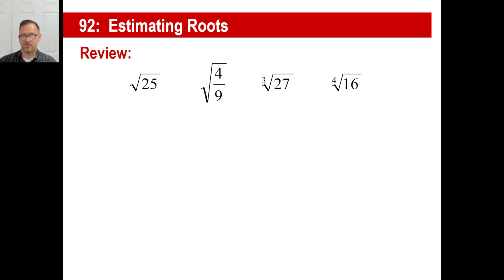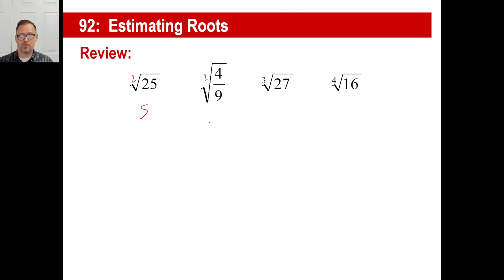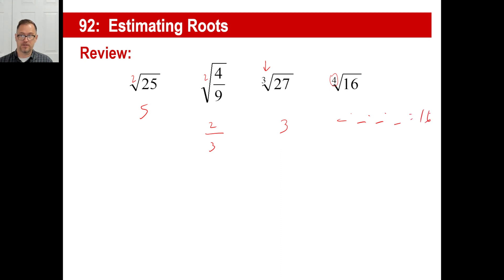Let's go back and do an oldie first. The square root of 25 — you know that's going to be a 2 index if you don't see anything — the answer is 5. The square root of 4 ninths: take each part separately, square root of 4 is 2, square root of 9 is 3, so the answer is 2/3. The cube root of 27 — what number times itself three times gives you 27? The answer is 3. The fourth root of 16 — something times itself four times equals 16 — the answer is 2.